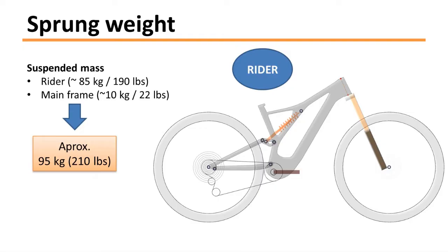Regarding the sprung weight, it's basically the remaining weight of the system, so it's you, your body weight, and the main frame weight. So for an average guy, probably this suspended mass, this sprung weight, is just about 90 to 100 kilograms depending on the rider's weight, obviously.